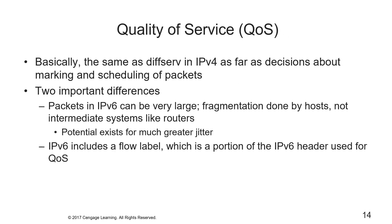QoS in v6 is basically the same as DiffServ in v4 as far as marking and scheduling of packets are concerned, but there are two big differences: packets in v6 can be very large (jumbograms), and fragmentation is done by the hosts — not the intermediate routers. Therefore, the potential exists for much greater jitter. Also, v6 includes a flow label, which is the portion of the v6 header used for QoS.